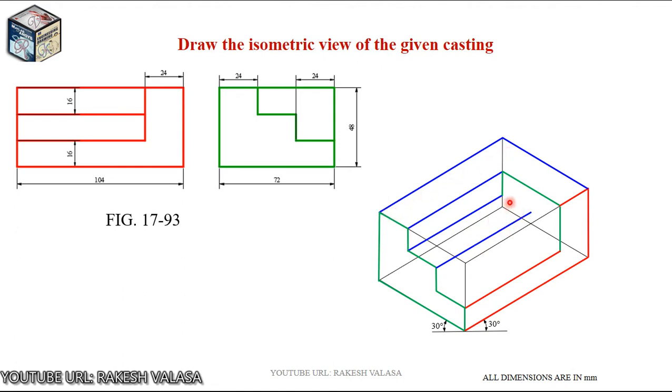Similarly, at the right side also, draw the parallel line. That line parallel to left side of cuboid edge. Similarly, we finish the remaining procedure. This is the final solution for the given isometric view of a given casting.